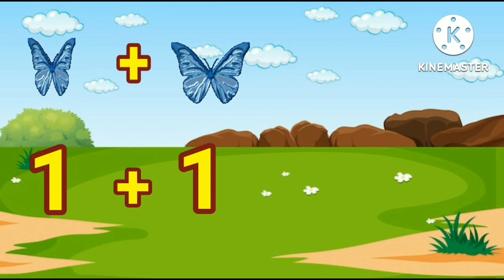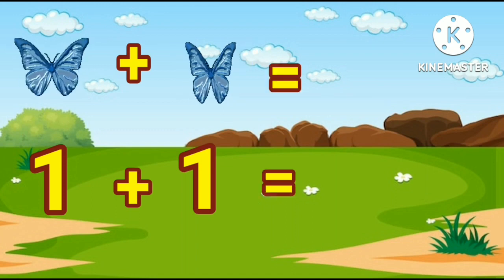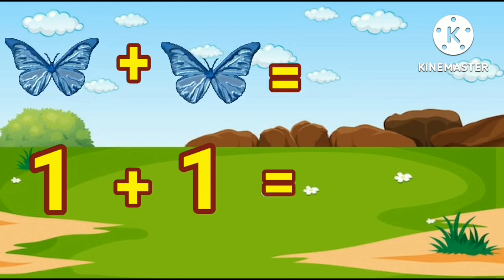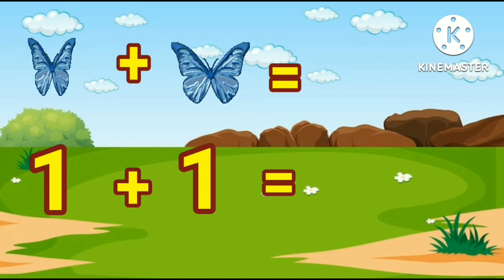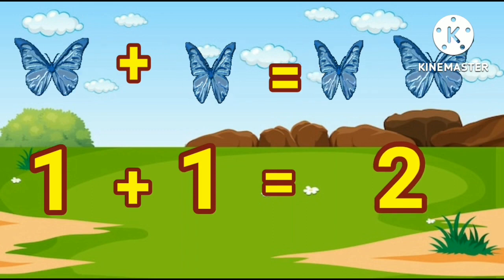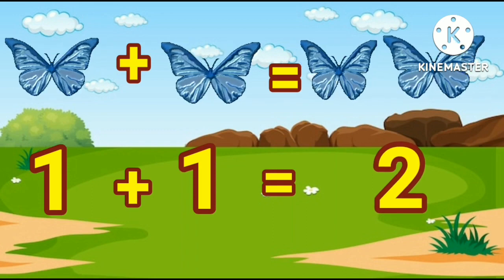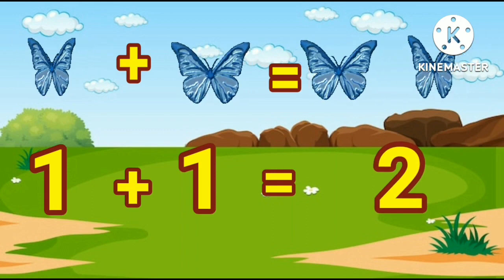Now we have to find the total number of butterflies. Let's count: one, two. So one plus one equals two.